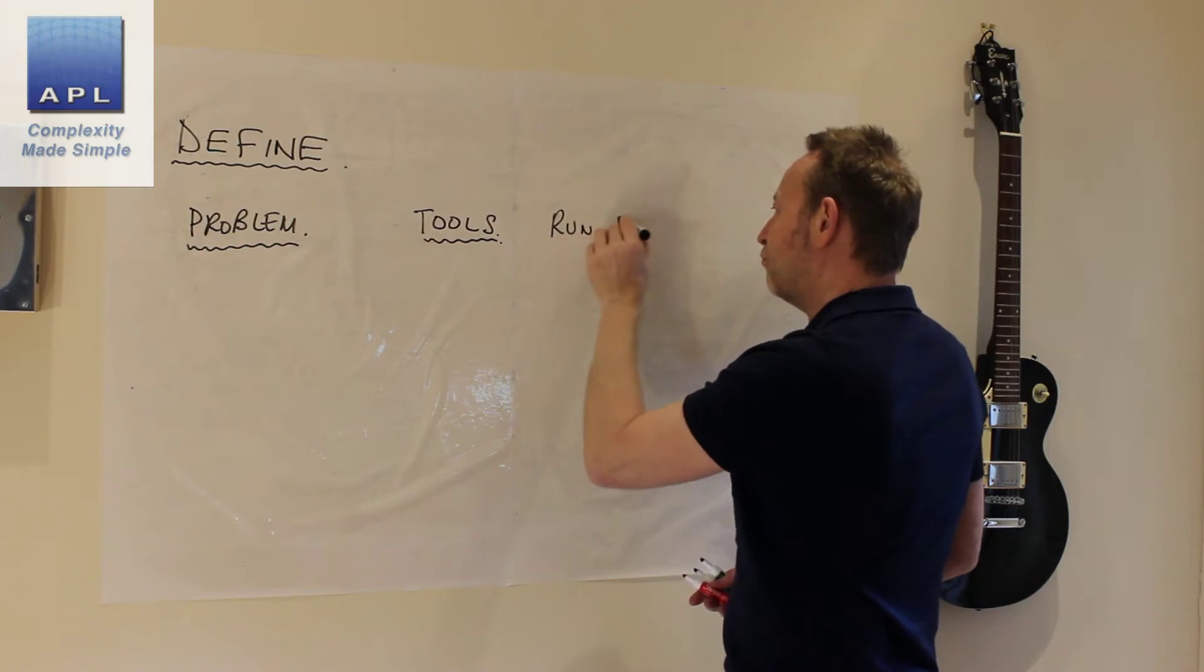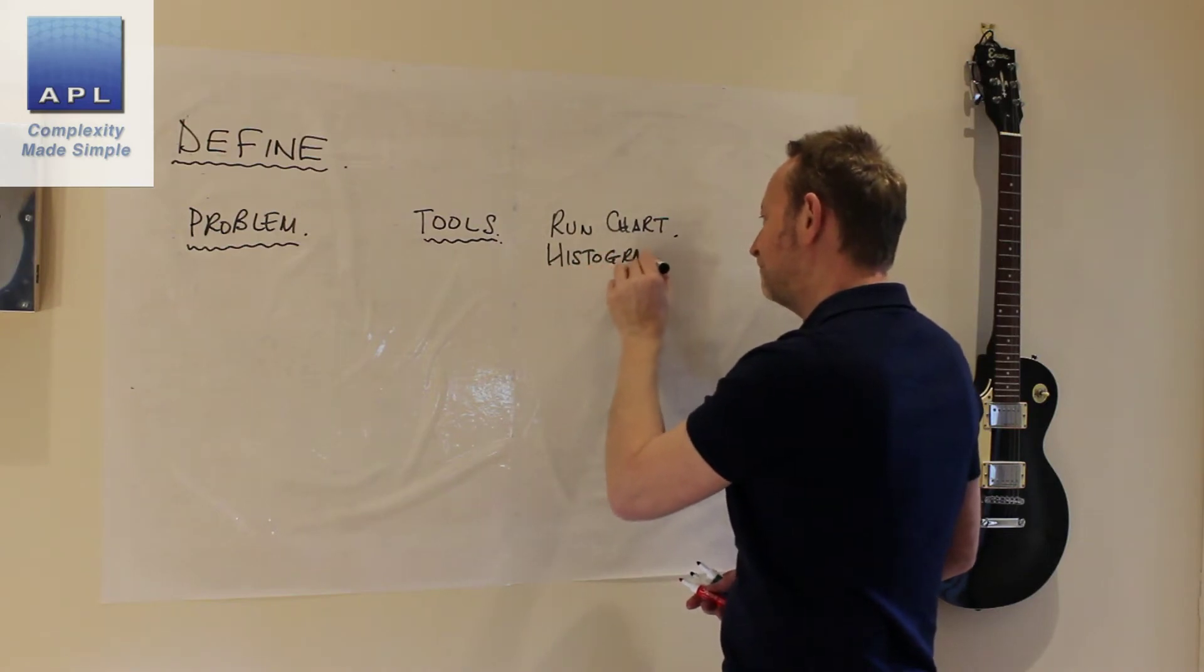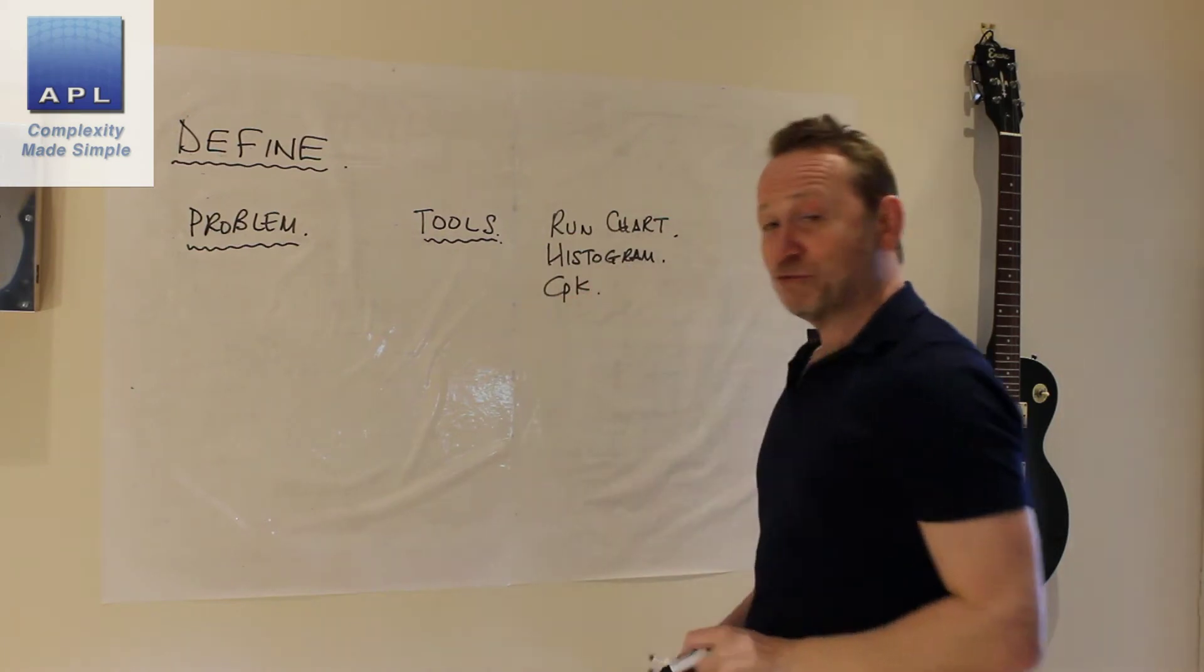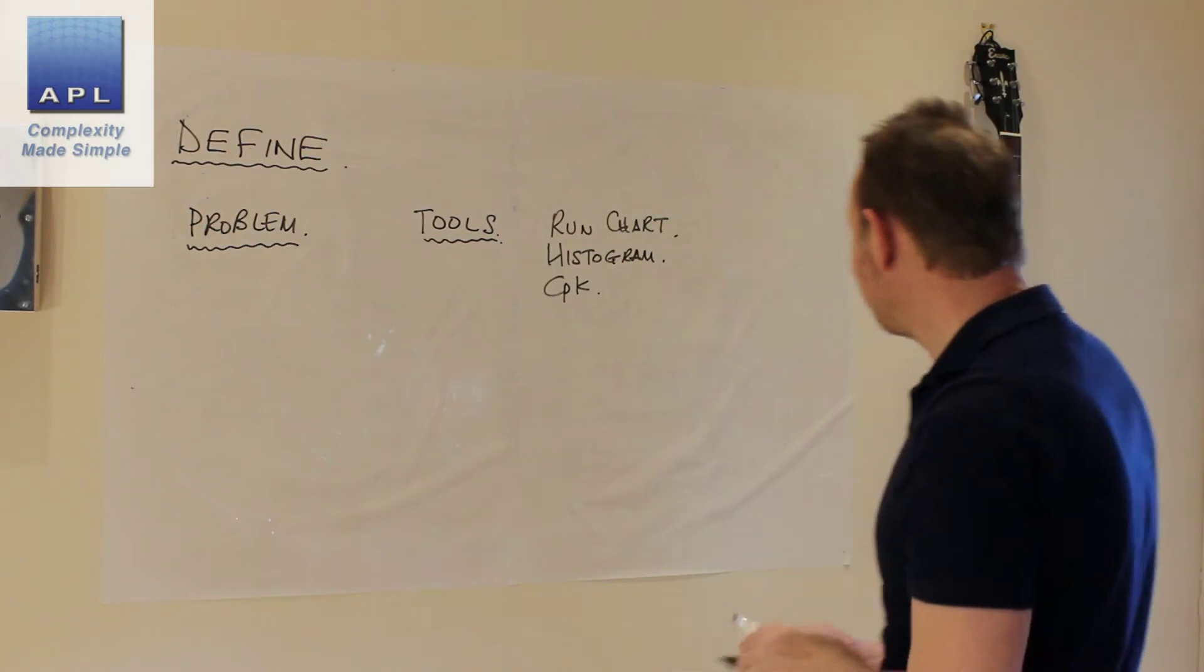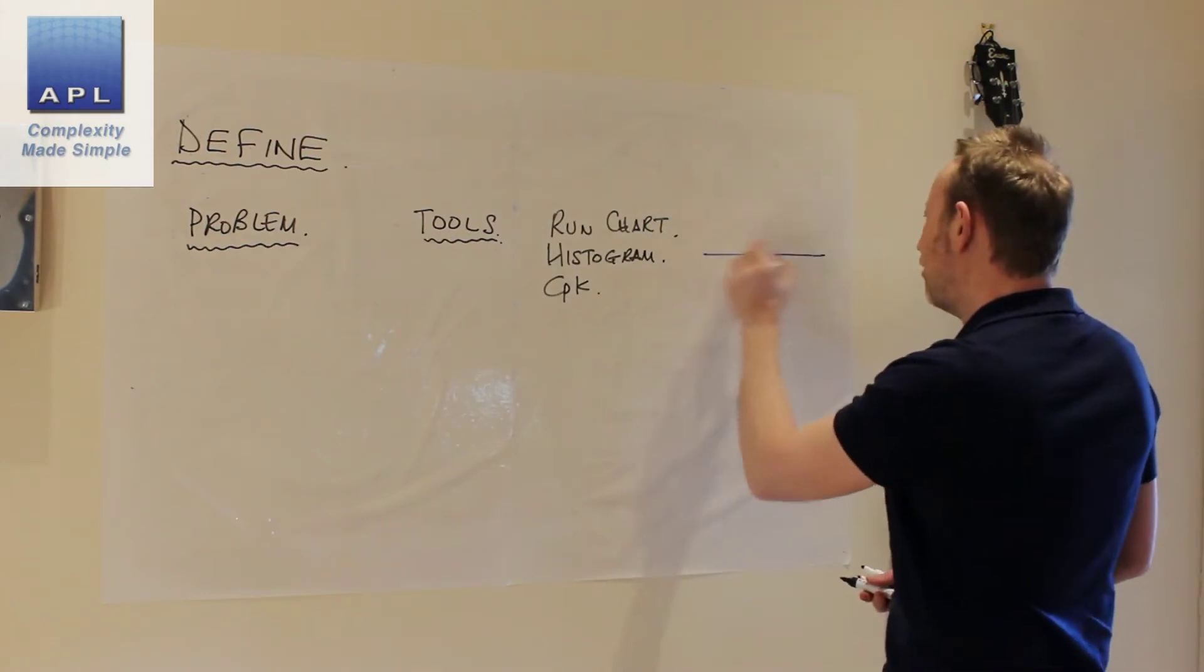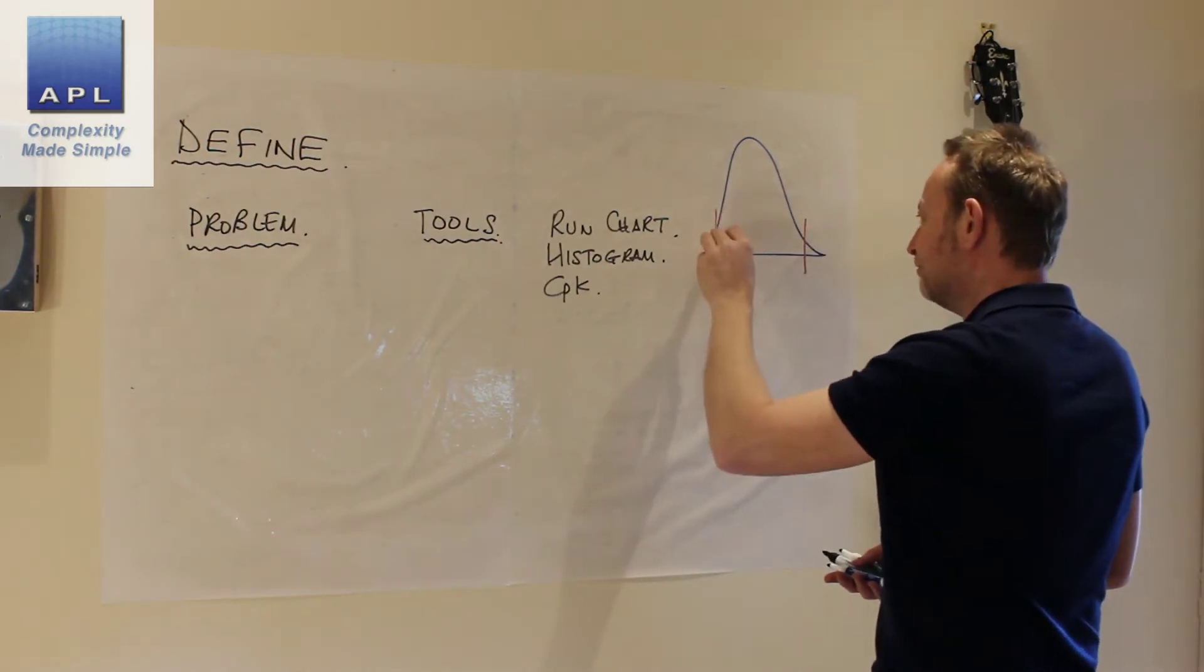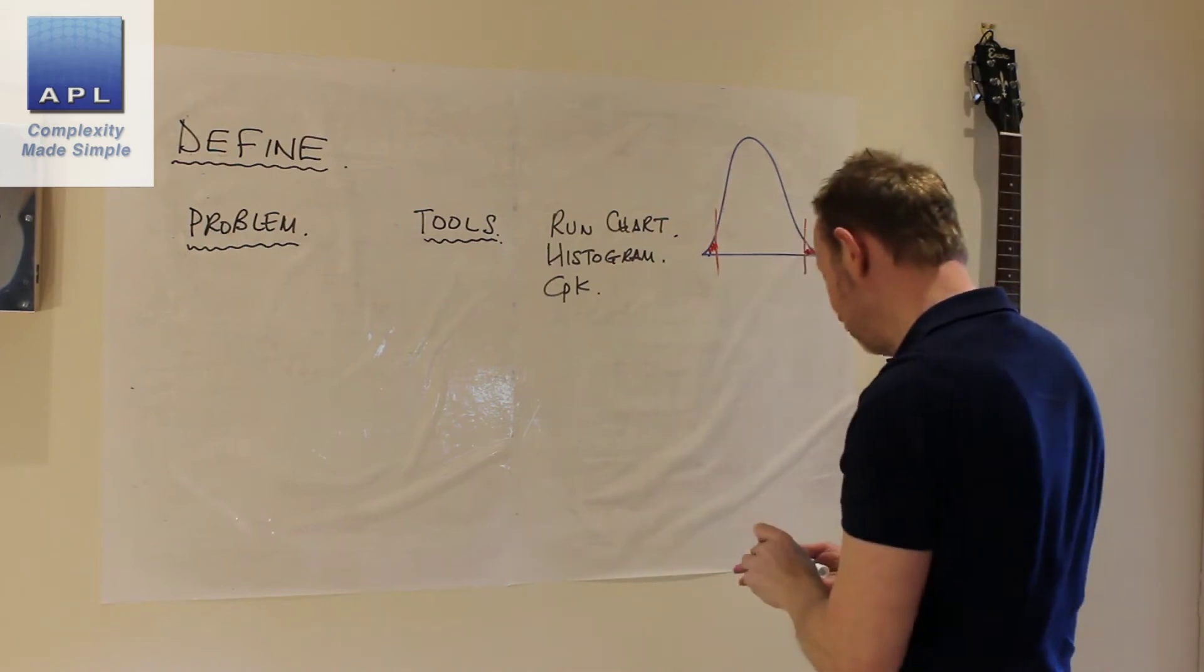Run chart, histogram, CPK. One of the things we're looking for here, I want to know whether what I'm trying to get rid of is noise, by the way this is the project you should be doing.